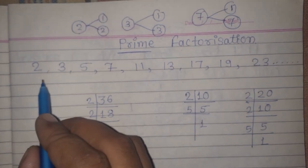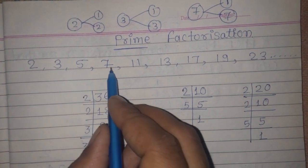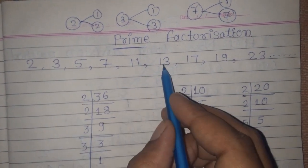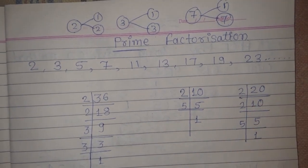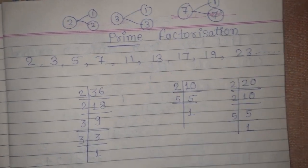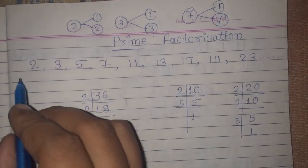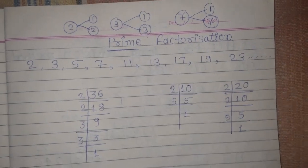Here I have given you a list of prime numbers: 2, 3, 5, 7, 11, 13, 17, 19, 23, and so on. When we have to factorize a number in prime factorization, we will use prime numbers only.